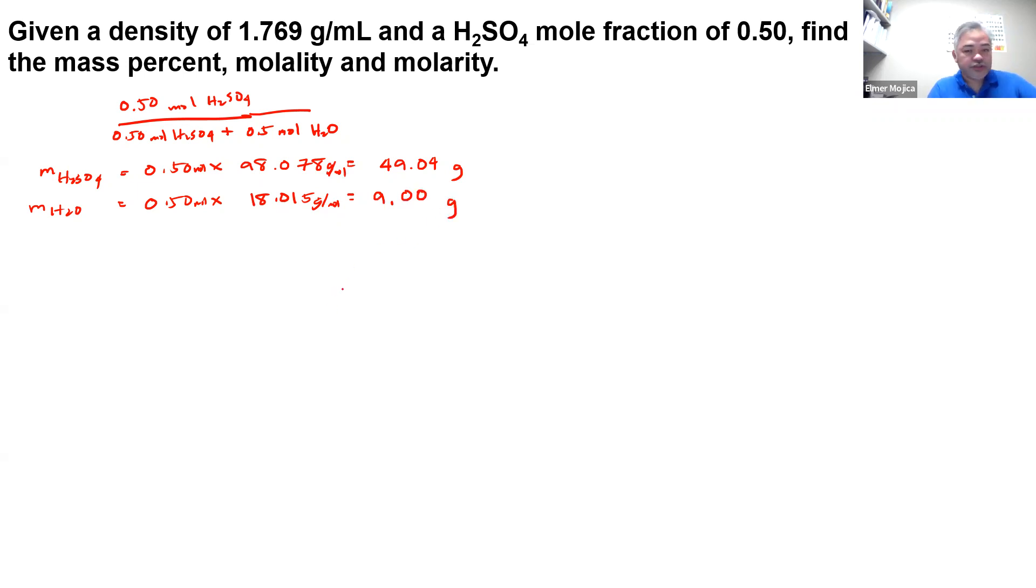So if you're going to have the mass, we can get the mass percentage of sulfuric acid. That's just 49.04 over 49.04 plus 9 times 100. And if you're going to do that, you're going to get around 84.5%.